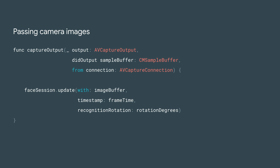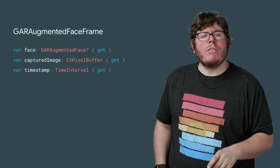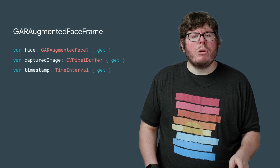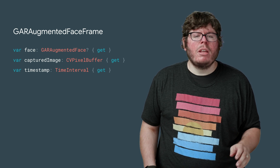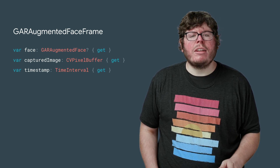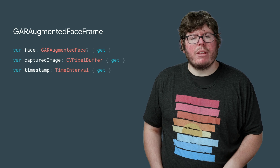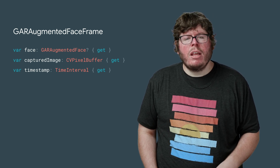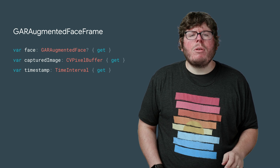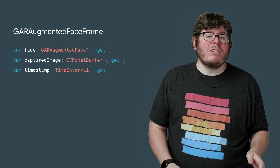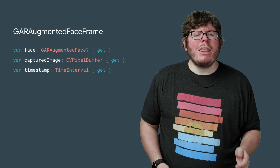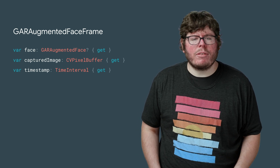After the image is processed, our API sends a delegate callback that gives you a GAR Augmented Face frame. It contains an Augmented Face object, which helps you attach effects to the face. It also contains the image buffer and the timestamp that you passed into the update method. This is useful for synchronizing the face effects to the images. This object also gives you a display transform and a projection matrix to make sure you can set up the 3D world and 2D views in a way that makes it easy to render your face effects.